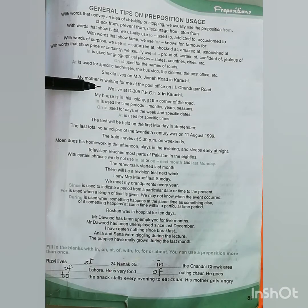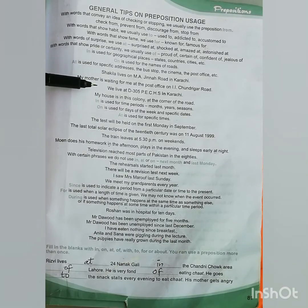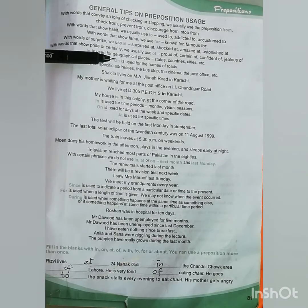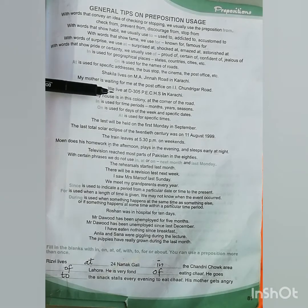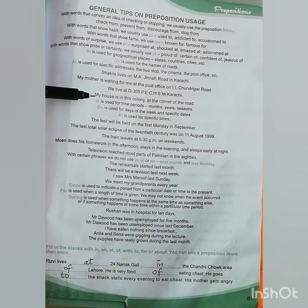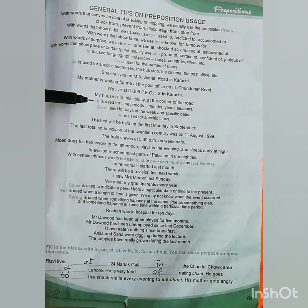We live at D305 P.E.C.H.S. in Karachi. As you see, there are addresses given in these sentences and we use 'on', 'for', and 'at' prepositions in these sentences. My house is in this colony at the corner of the road — 'at' is the preposition.